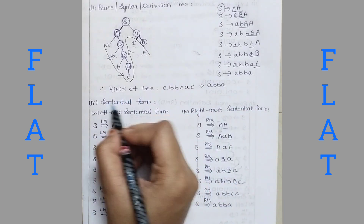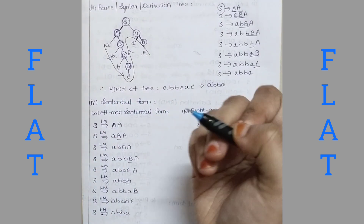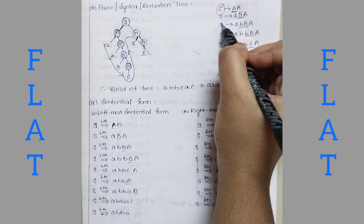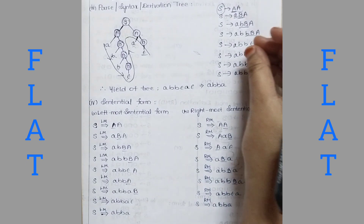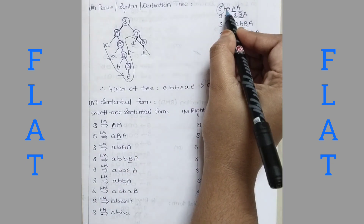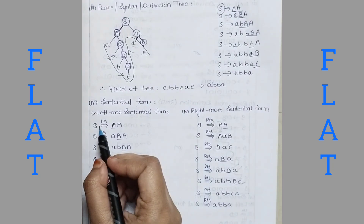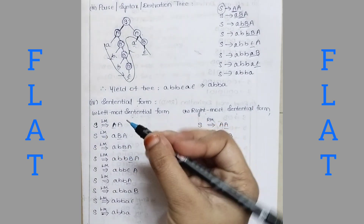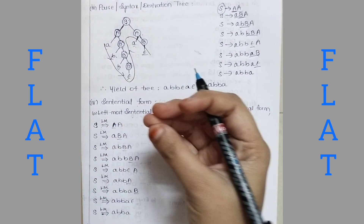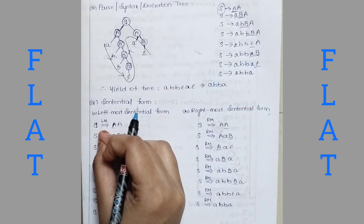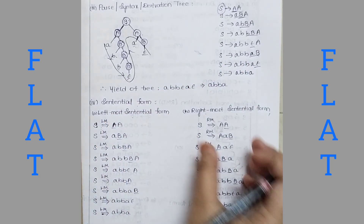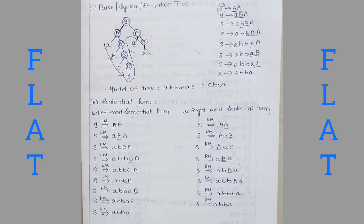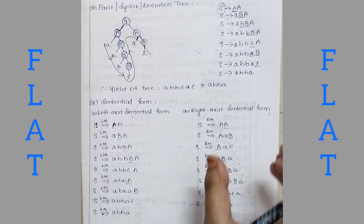The last question is the sentential form. There is no separate sentence form — the sentential form is derived from LMD and RMD. The left-most sentential form comes from LMD steps, and the right-most sentential form comes from RMD steps. Each step in the derivation is a sentential form.